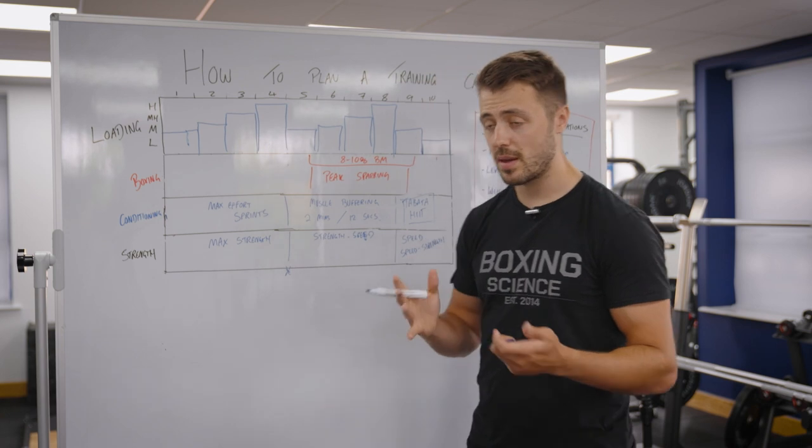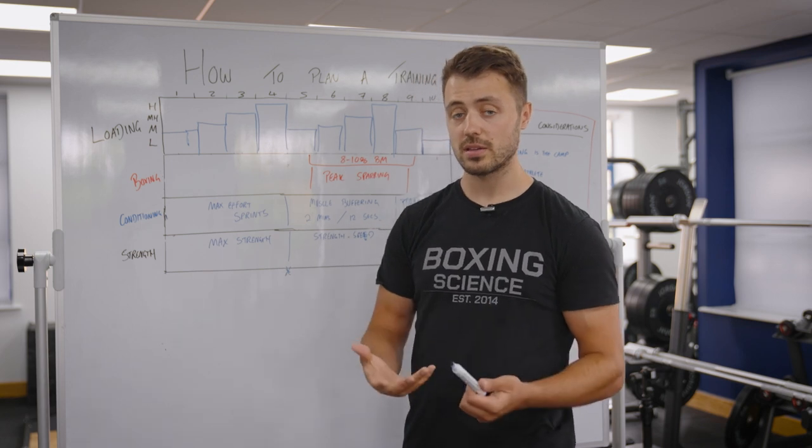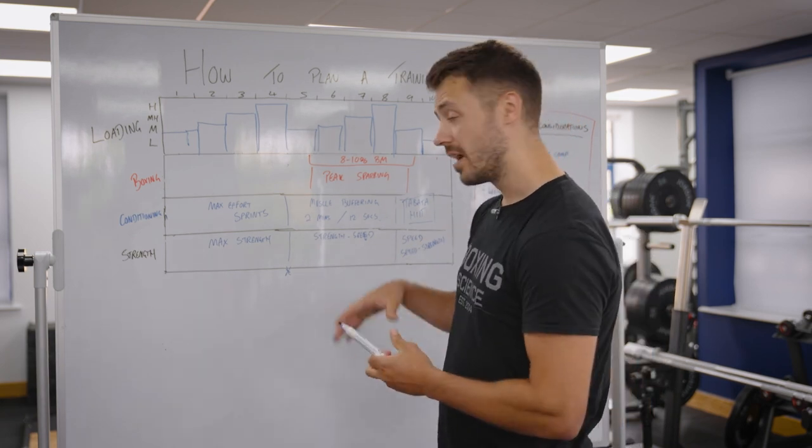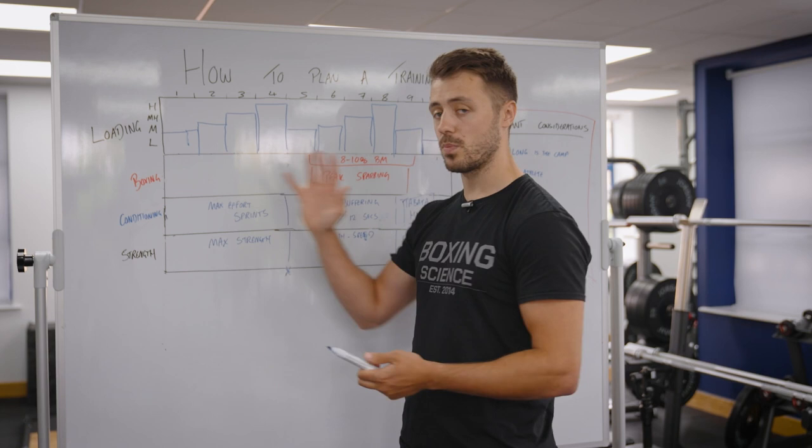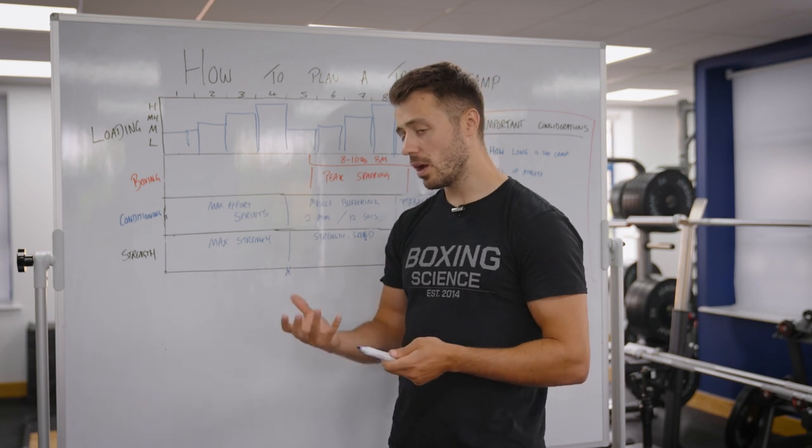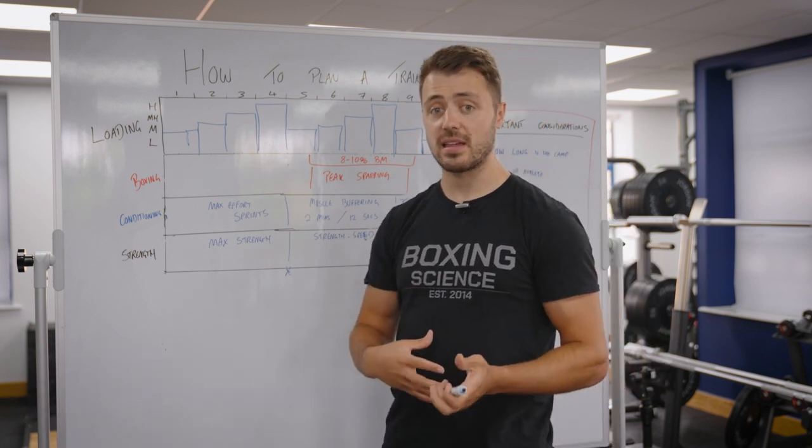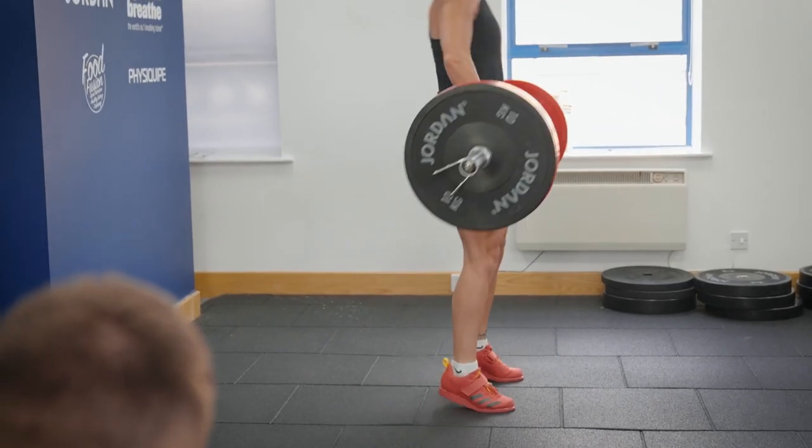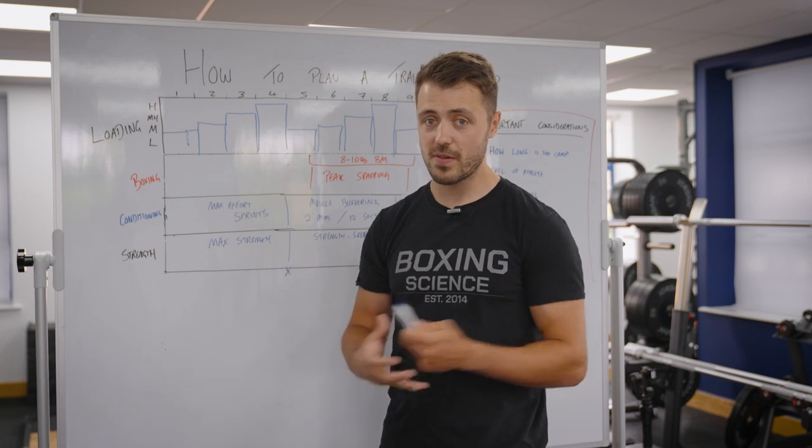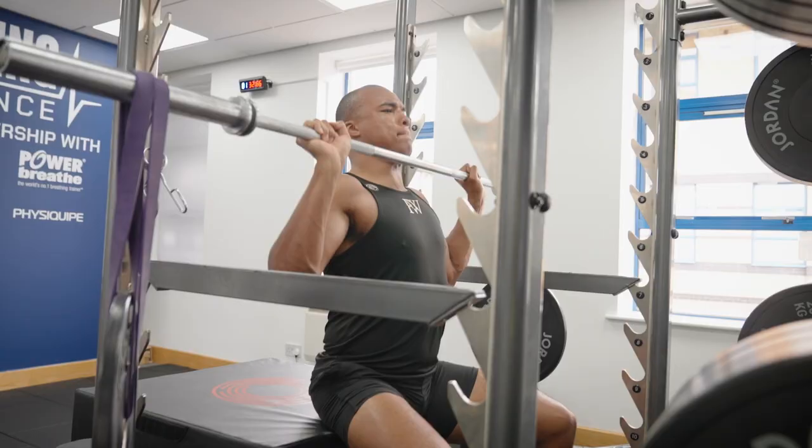So we've got max strength here and then strength speed. Strength speed can be targeted in many different ways. We can use Olympic lifting, we can use loaded jumps, we can use complex training or contrast training and we can also use velocity based training as well. This all depends on what the athlete has done in the previous camp, what their strength levels are and also what their limitations are as well. So some of our athletes can do Olympic lifting and some can't, some people can do a lot of jumps and can really excel in that, some prefer doing the speed lifts and the banded lifts as well. So you've got a range of different exercises that you can do.